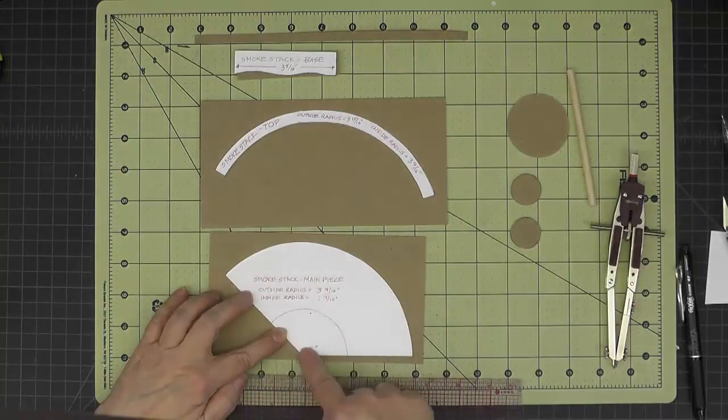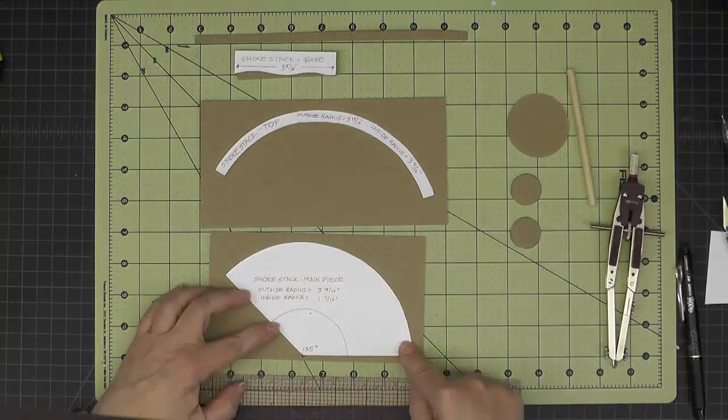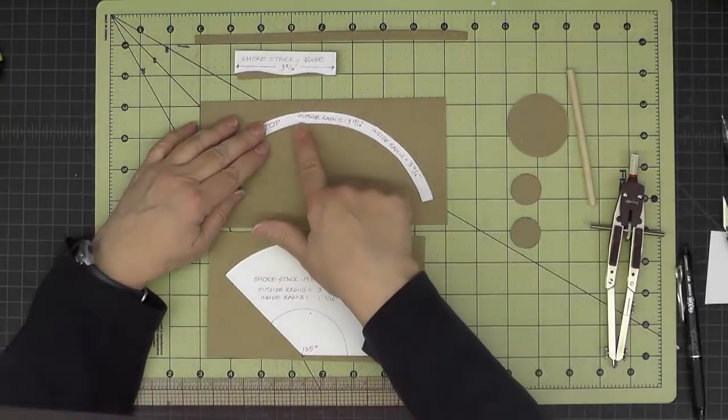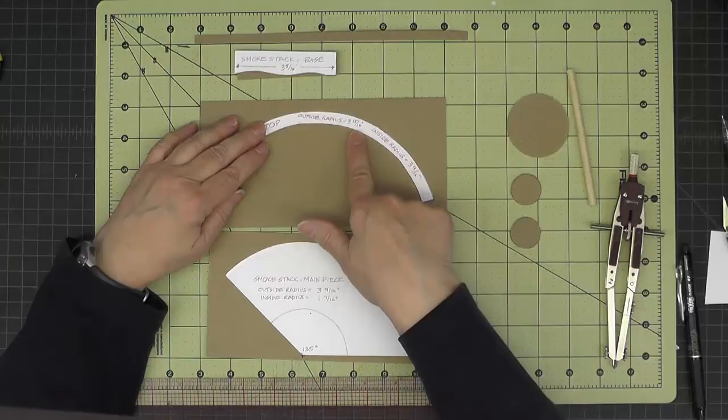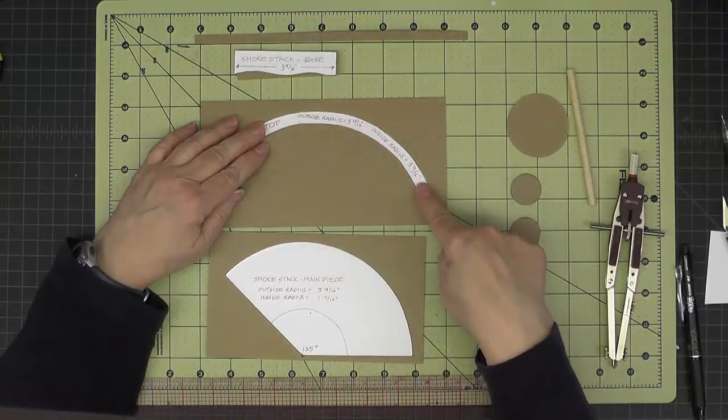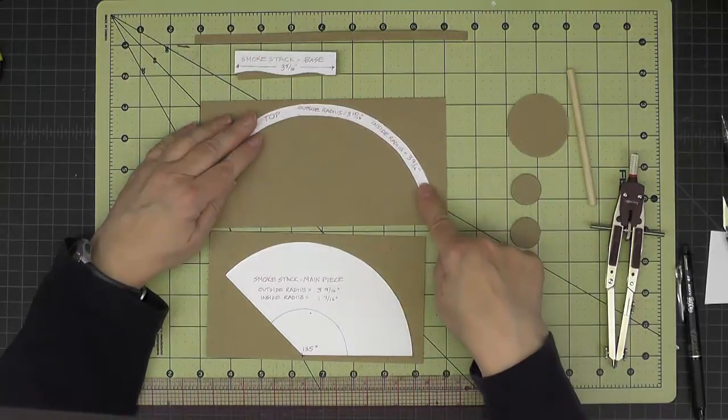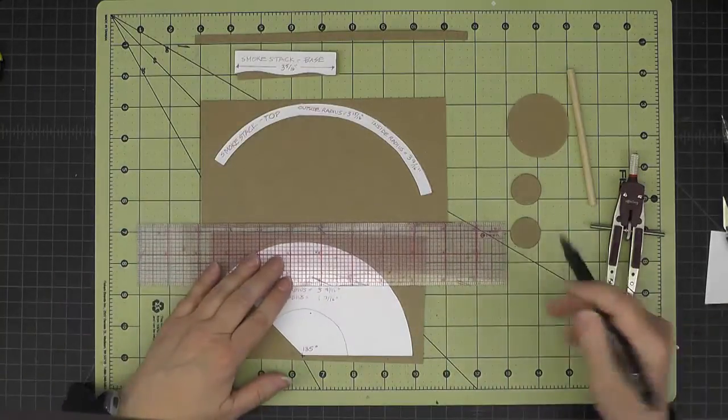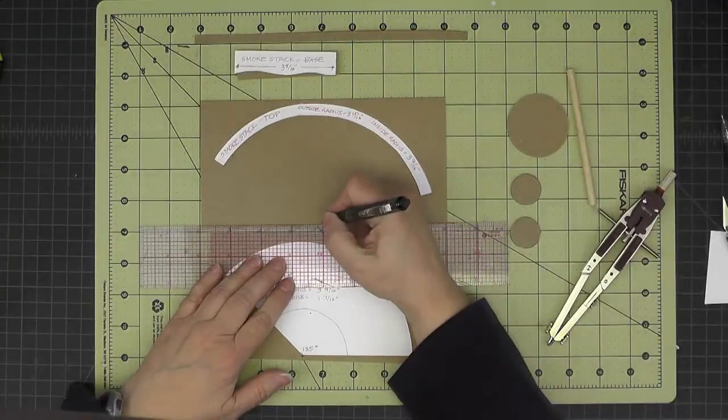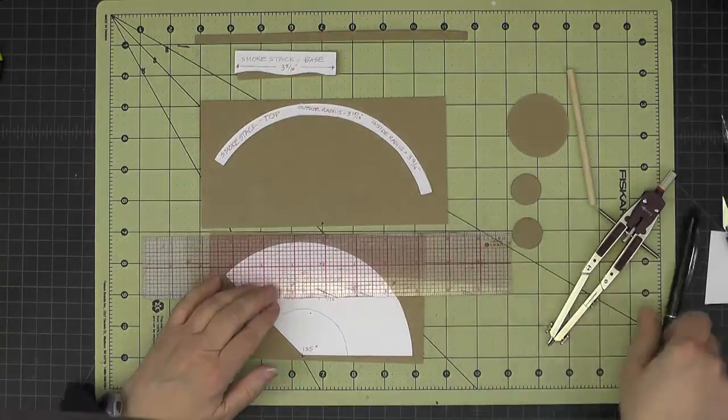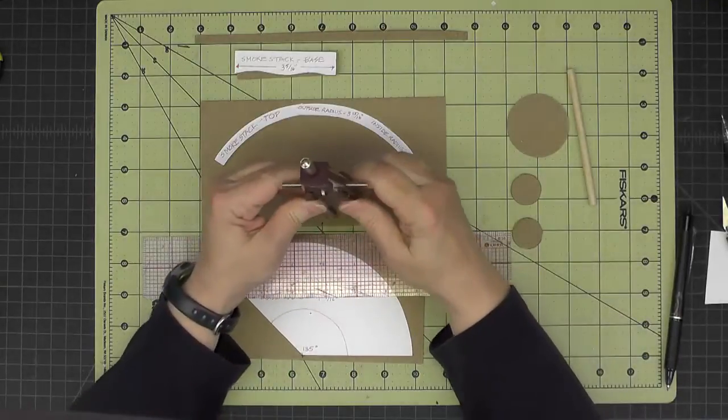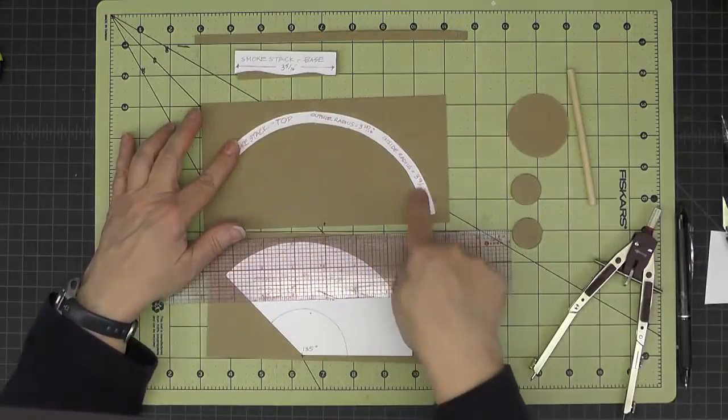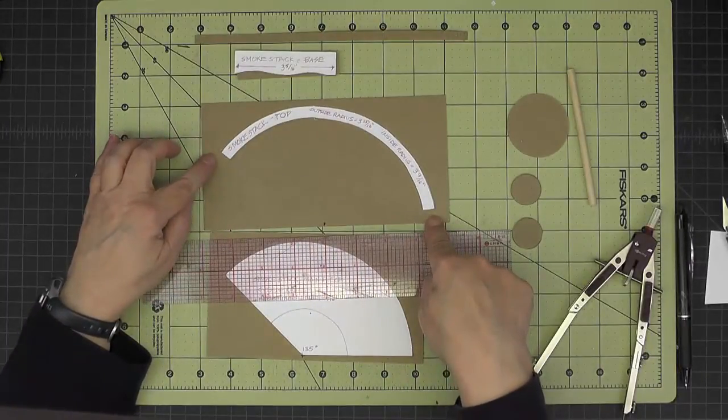And then for the smokestack top, again it has an outside radius of three and fifteen-sixteenths, and an inside radius of three and nine-sixteenths. So if you use your compass, set a point here. This has been sized so there's plenty of room here. And then you can just set your compass and draw those two radiuses, and then use the template to know how long to have the curve.